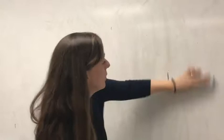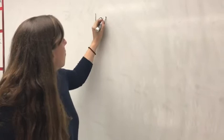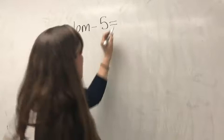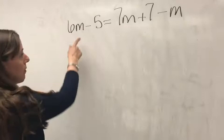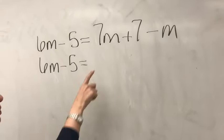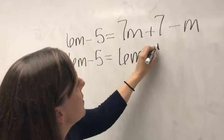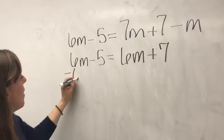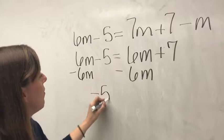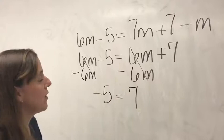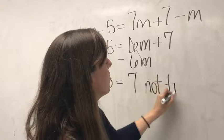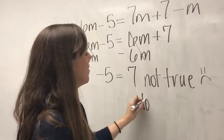Let's solve 6m minus 5 equals 7m plus 7 minus m. Combining like terms on the right: 6m minus 5 equals 6m plus 7. Now subtract 6m from both sides: negative 5 equals positive 7. That is never true, so this equation has no solution.